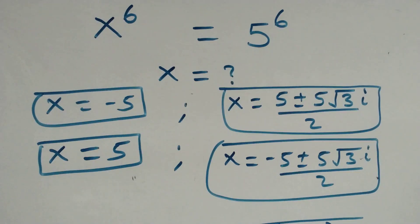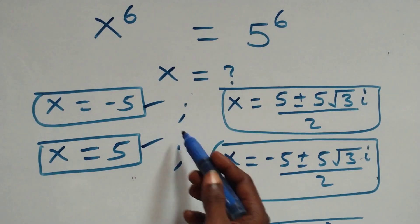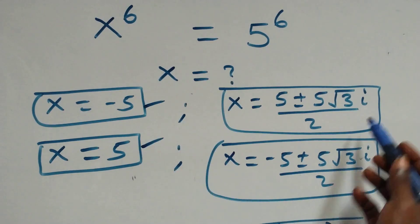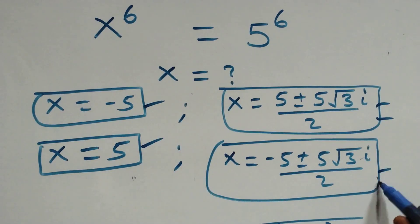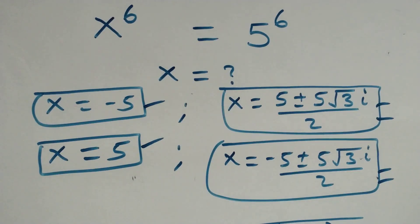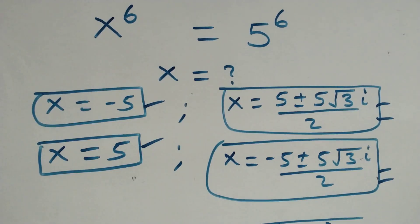Altogether in this problem we have six solutions: two real solutions, two complex solutions from the first case, and two complex solutions from the second case. Thank you for watching — don't forget to subscribe for more videos, turn on the notification bell, share, give a thumbs up, and put your comments. See you next class, bye for now.